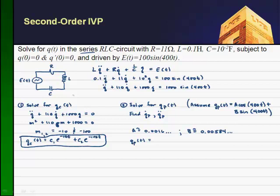So my particular solution looks sort of like this. I get 0.0016 cosine of 400T plus 0.00584 sine of 400T. So we don't really need all the accuracy. I'll put it in MATLAB or Mathematica anyway and it'll keep all the numbers, so there's no real reason to keep it now.